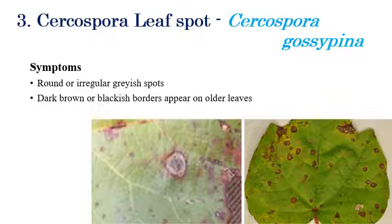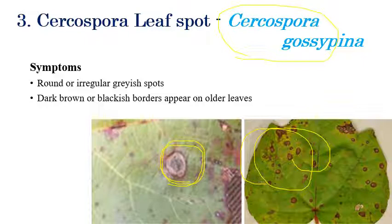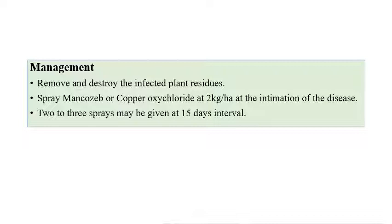The third disease is Cercospora leaf spot, caused by Cercospora gossypina. As the name indicates, irregular gray color spots or dark brown to blackish spots can be seen on leaves, with dark brown or blackish borders clearly visible. Coming to management: remove and destroy infected plant residues, and spray mancozeb or copper oxychloride at the rate of 2 grams per liter. Two to three sprayings at 15-day intervals are recommended.